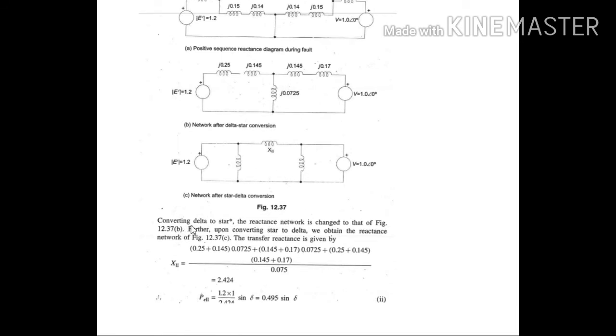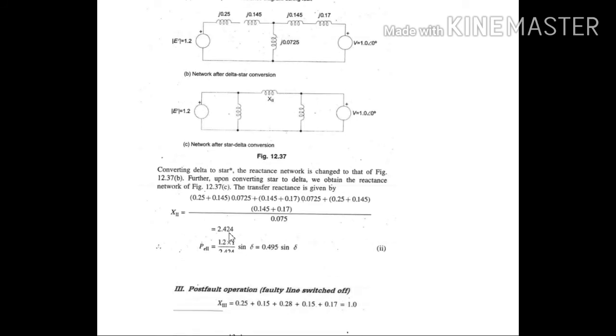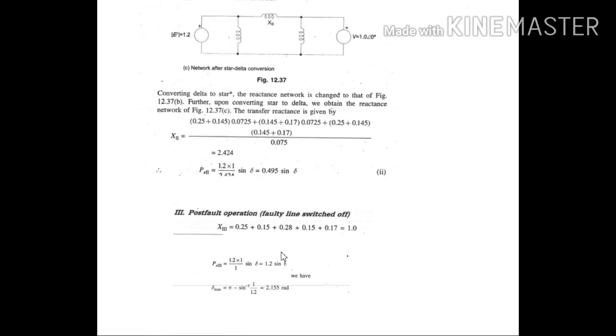Now as said here, converting delta to star and star to delta, we obtain the values as 2.424. Then substituting these values in expression, we got the expression PE2 as 0.495 sine delta.